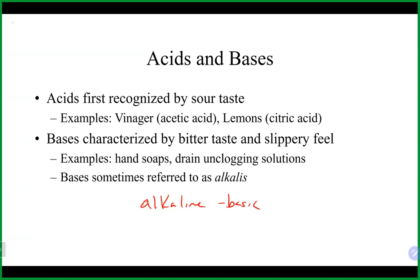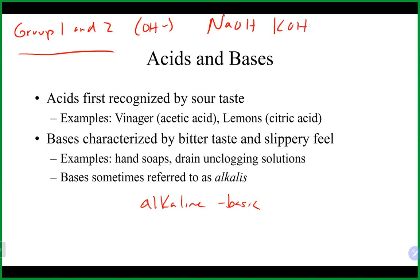A lot of our strong bases come from group one and group two on the periodic table — our alkali metals and alkaline earth metals. Those in group one and group two that have hydroxide in the formula, things like sodium hydroxide and potassium hydroxide, are where a lot of our strong bases come from. Strong bases will actually have that OH⁻ in the actual formula itself.